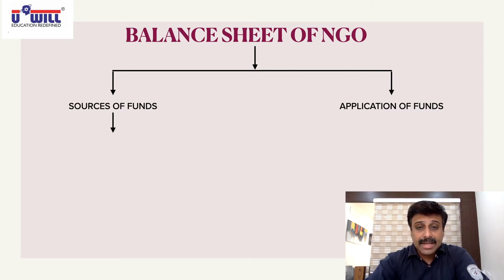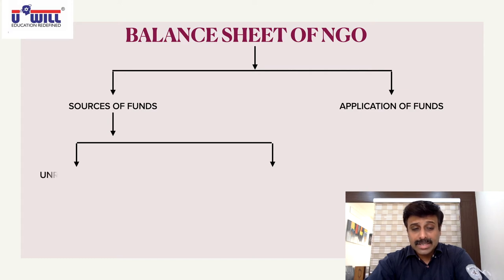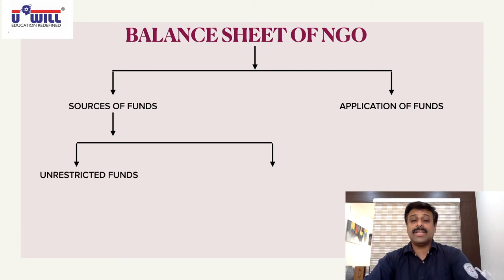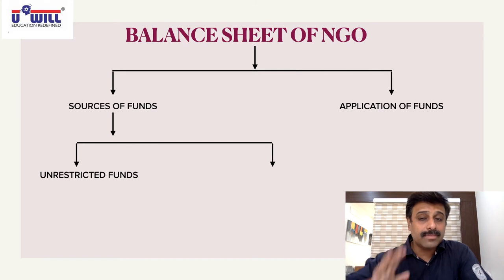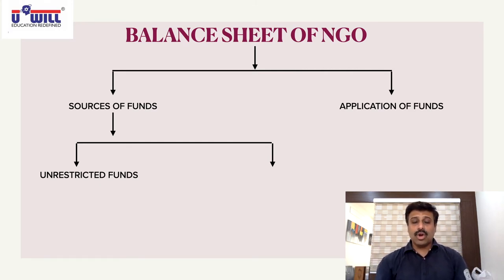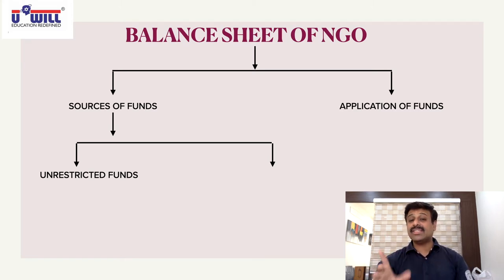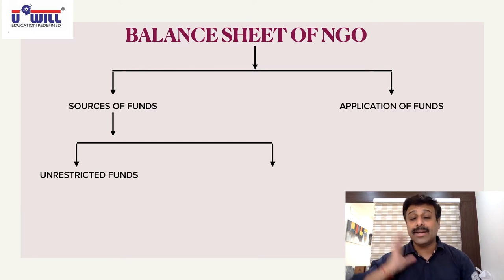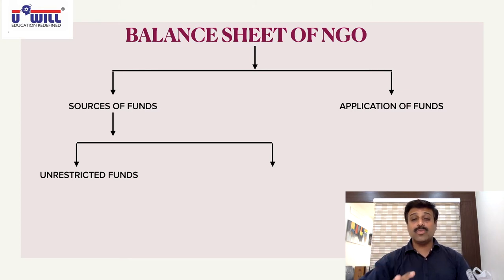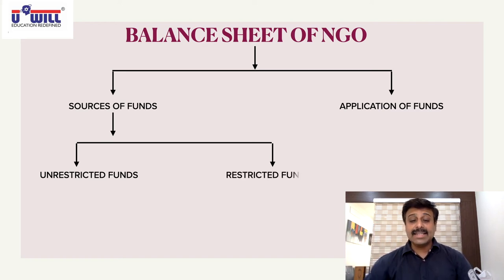Sources of funds are mainly classified into two things: unrestricted funds and restricted funds. Unrestricted funds means you get funds which are unrestricted — the NGO can use such funds for any purpose they want. There are no legal restrictions, and no restrictions by the fund provider. For example, if someone donates one lakh rupees with liberty to use it for any purpose, those are unrestricted funds.